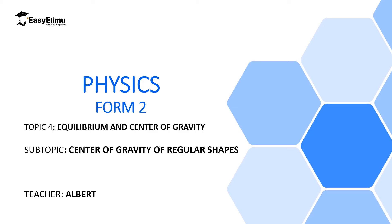Welcome to ECELIMU Learning Simplified. In the previous lesson we discussed the introductory part of equilibrium and center of gravity. We defined the center of gravity as a point where the whole weight of a body appears to act from. We also determined the center of gravity of a meter ruler, which acts at its 50 centimeter mark.